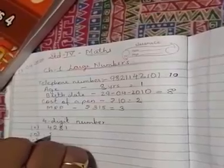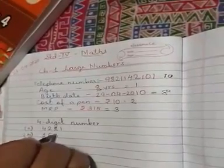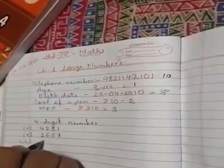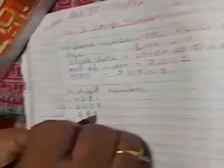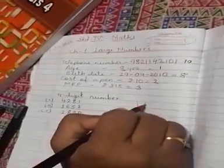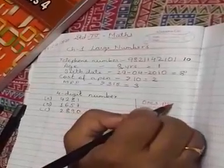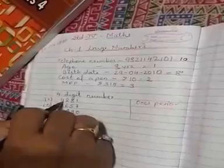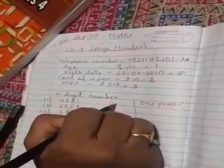Give me randomly some examples of 4 digit number. 4,281. Very good. 1,657. 2,890. Suppose if I want to place them in a table, I will make a table over here. So you know the periods. There are two types of periods. One period and as it is a thousand, we will have one thousand period.